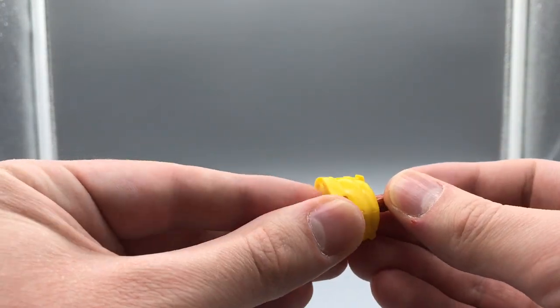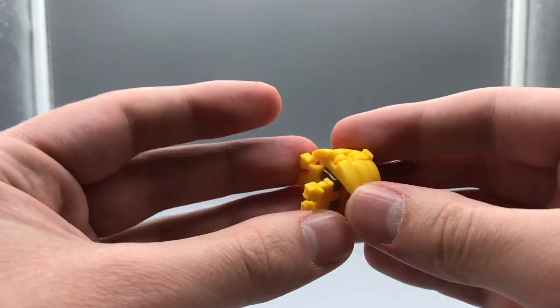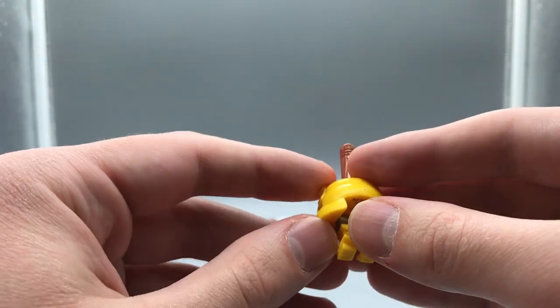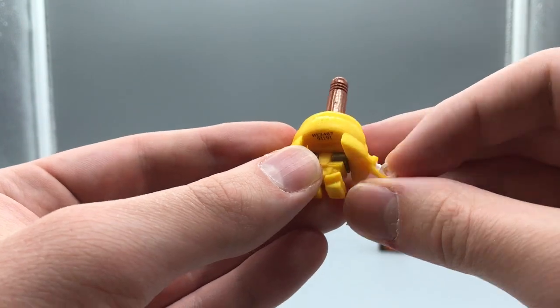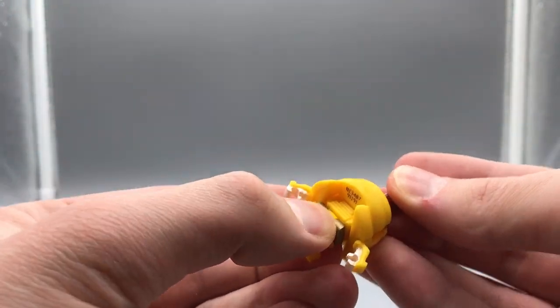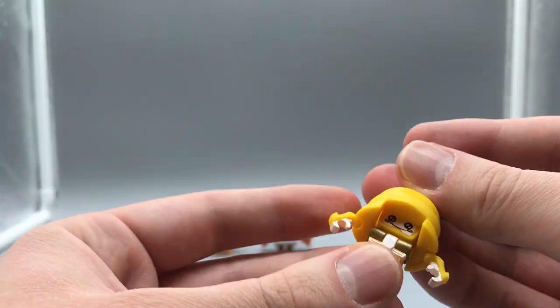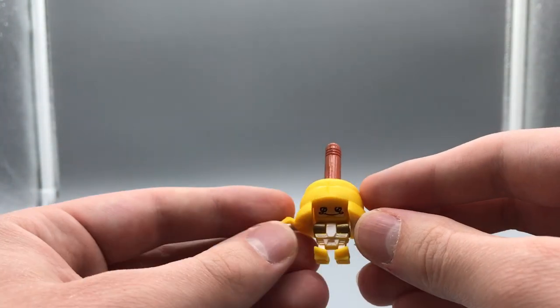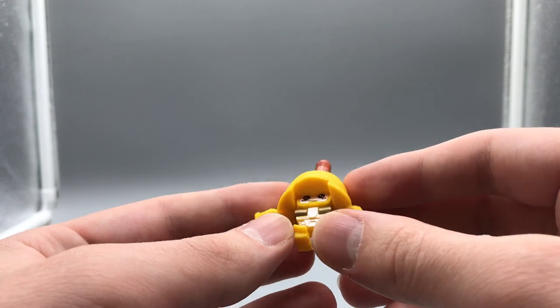So transformation, we are going to flip the both the front half and the back half of the legs down, pull the arms out, rotate them down, and pull up on the head. And there is Dingledy Doo in her robot mode. And she's a little cutie.